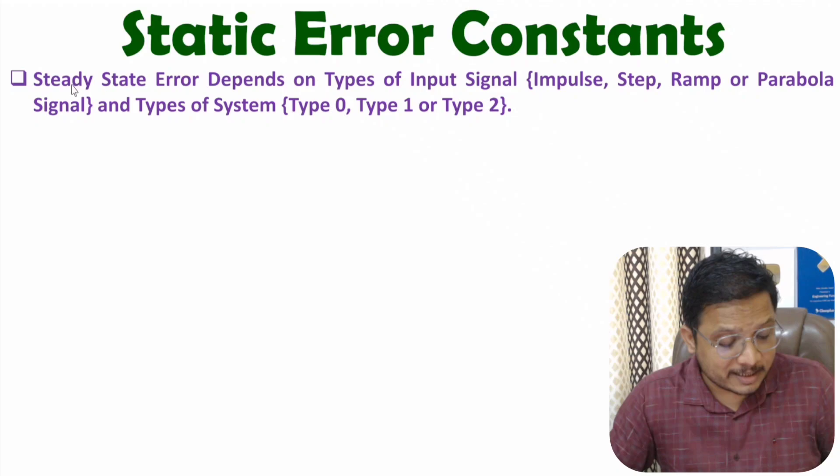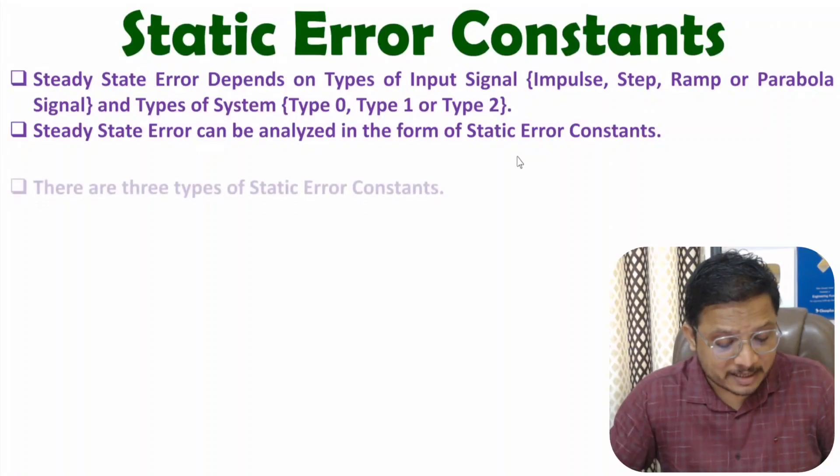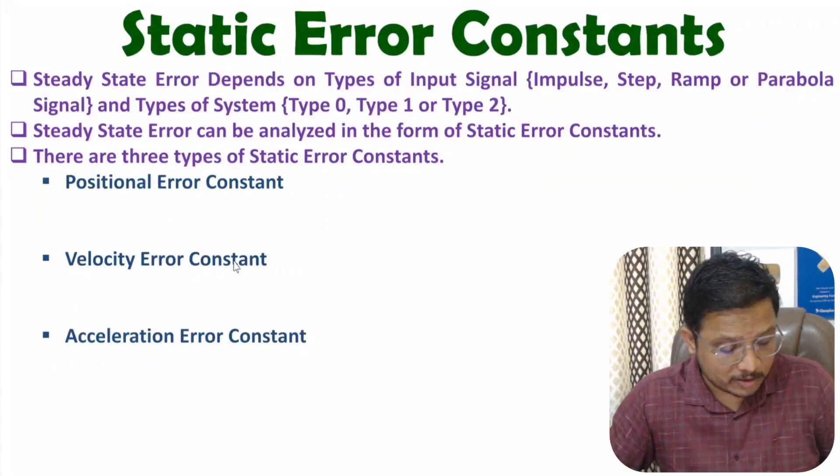Analysis of steady state error can be done using static error constants. There are three types of static error constants: positional error constant, velocity error constant, and acceleration error constant.